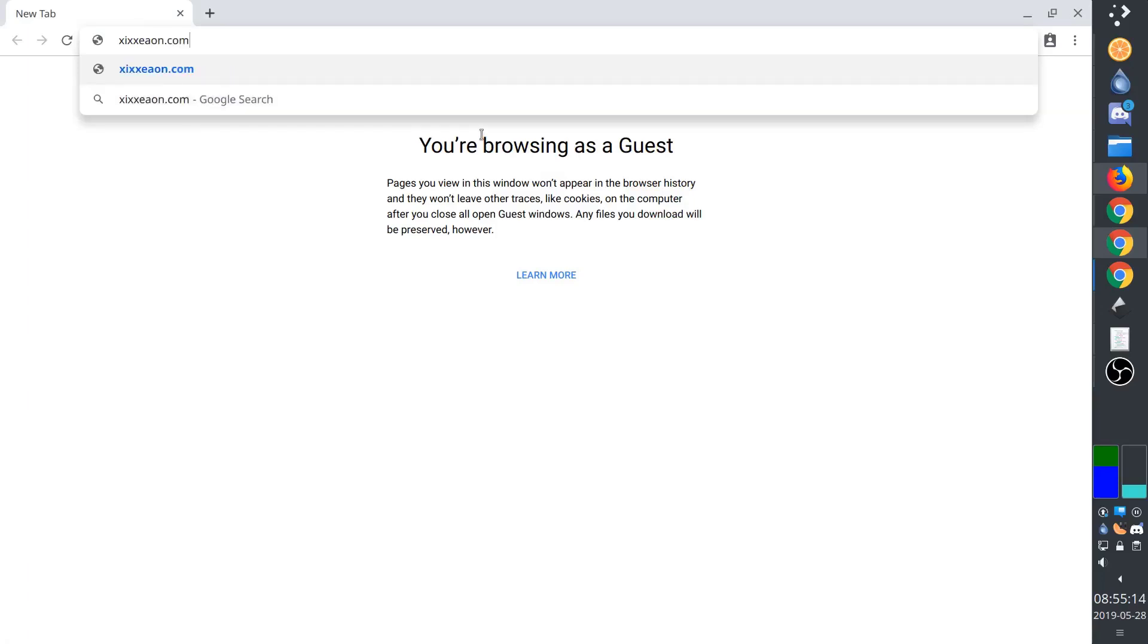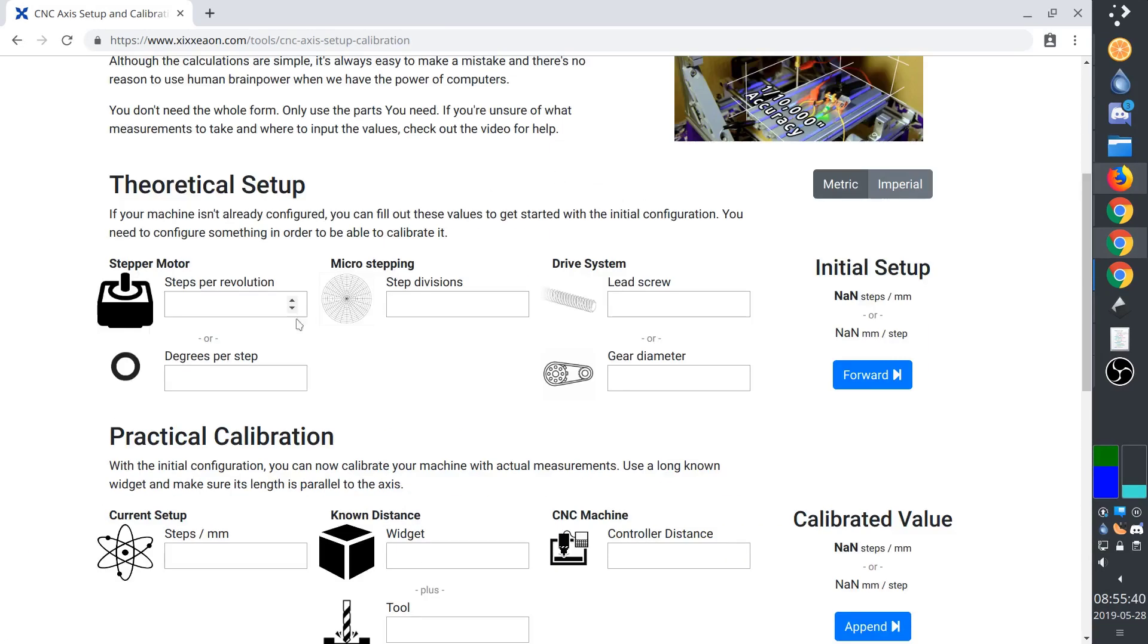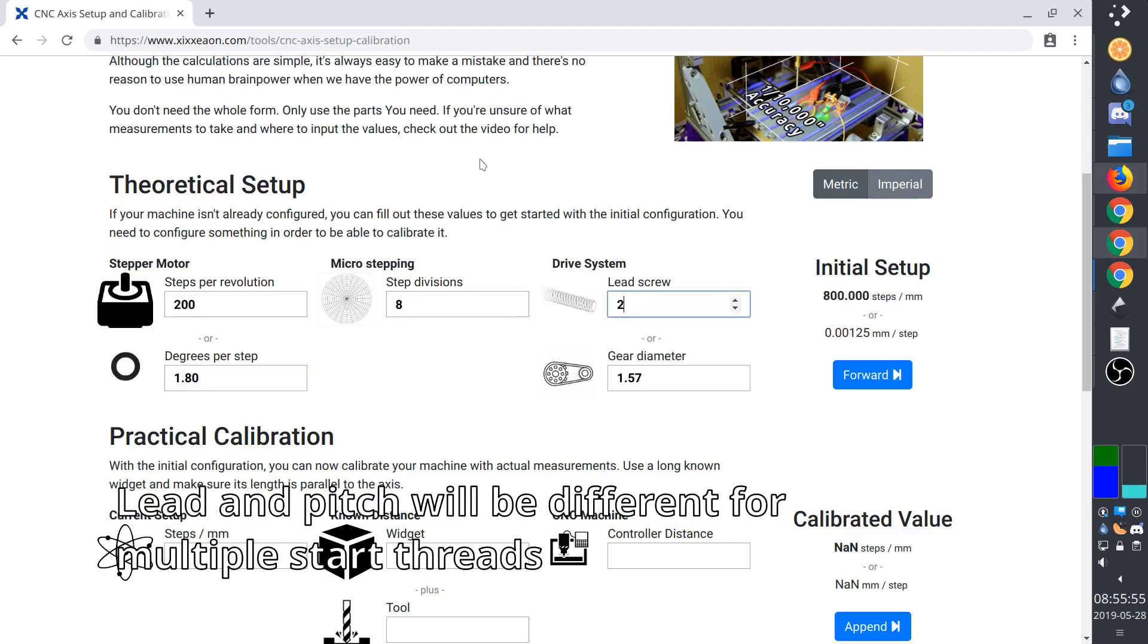Luckily, there's a handy tool on my website. I'll put in the number of steps per revolution, it gives me the degrees per step. I have 8 microstepping on this machine, and the lead on my screw is 2 millimeters.